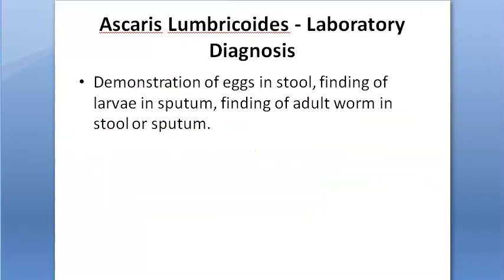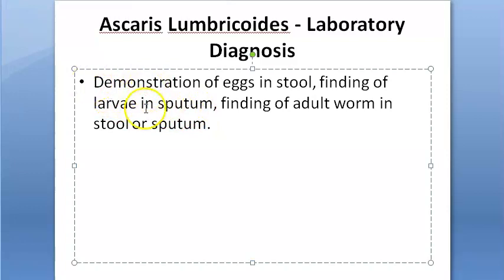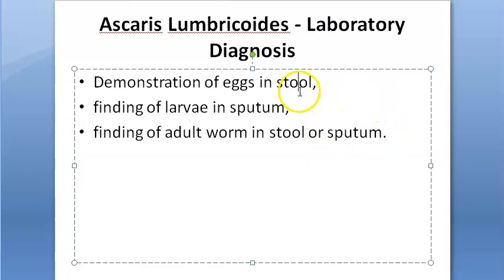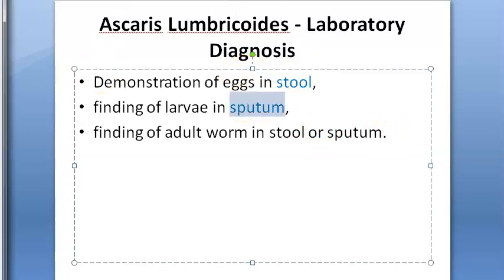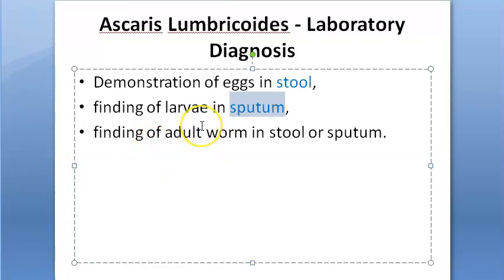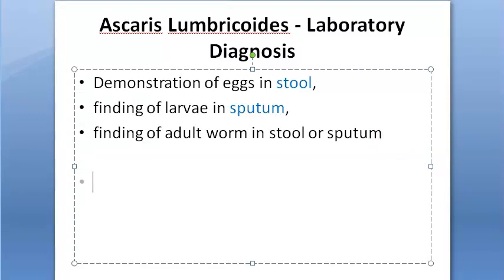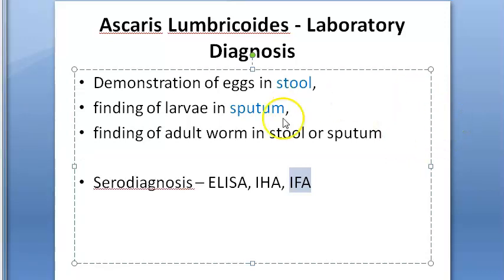For laboratory diagnosis: demonstration of eggs in the stool, finding larvae in the sputum, or finding an adult worm in the stool or sputum. You will perform wet mount examination, stool examination, and sputum examination. Sputum may show Charcot-Leyden crystals and blood tinge. Adult worms can occasionally be seen by naked eye after purgation. Serological diagnosis includes antibody detection by ELISA, indirect hemagglutination, and immunofluorescence assay.